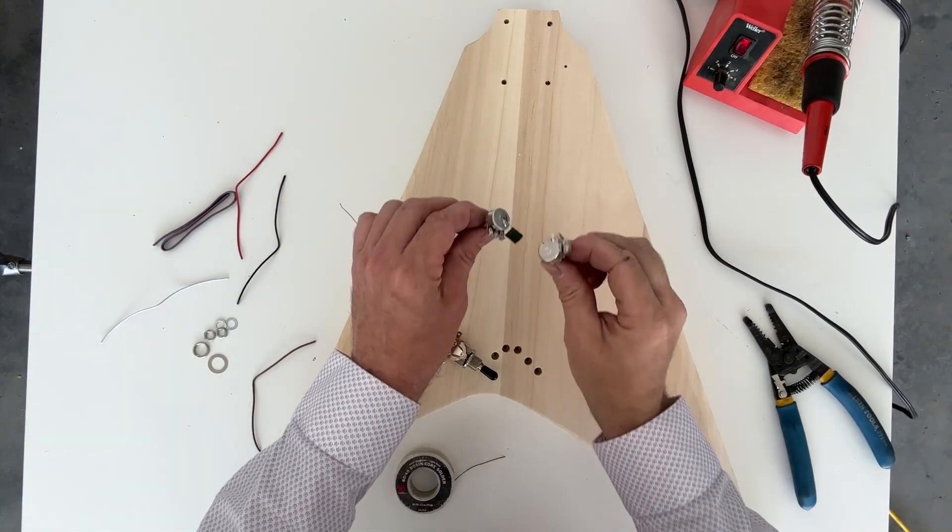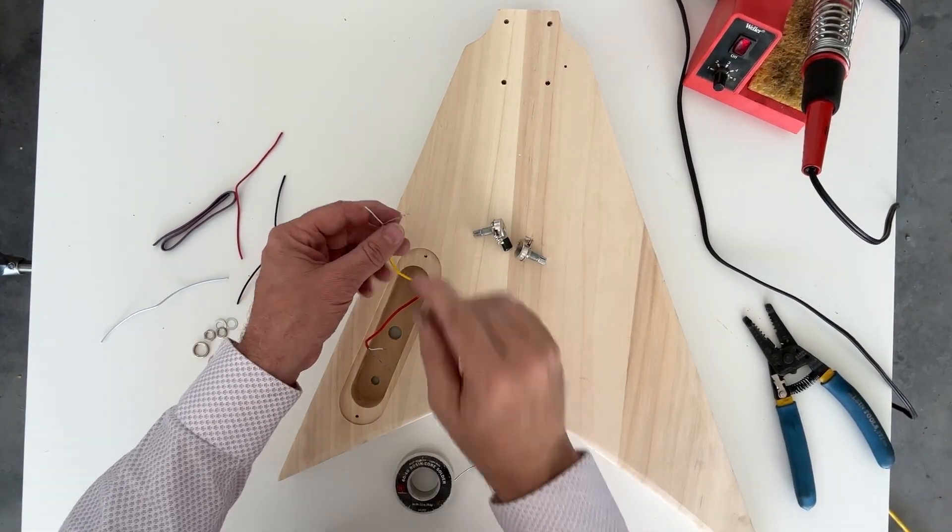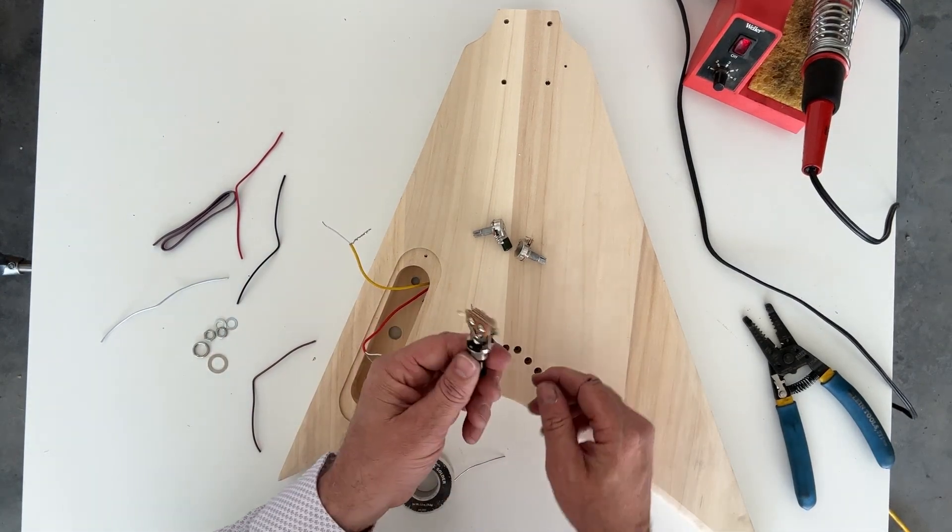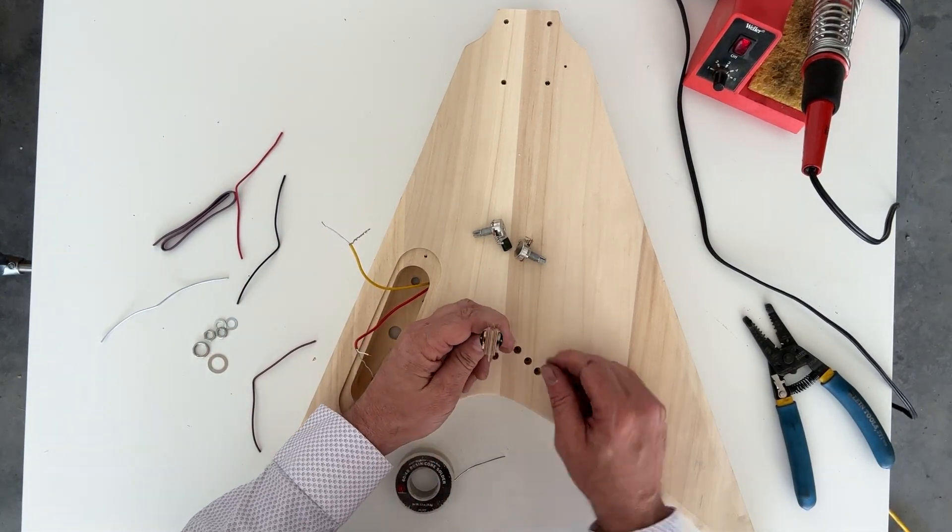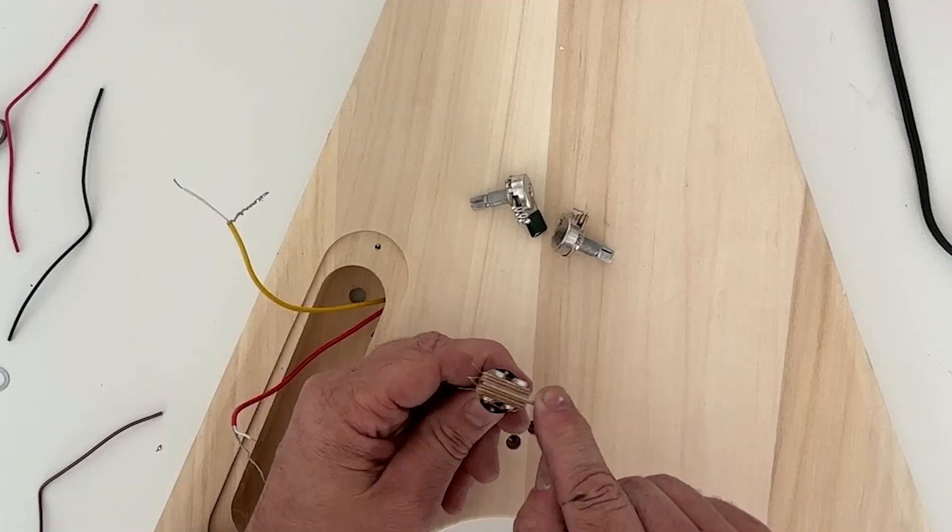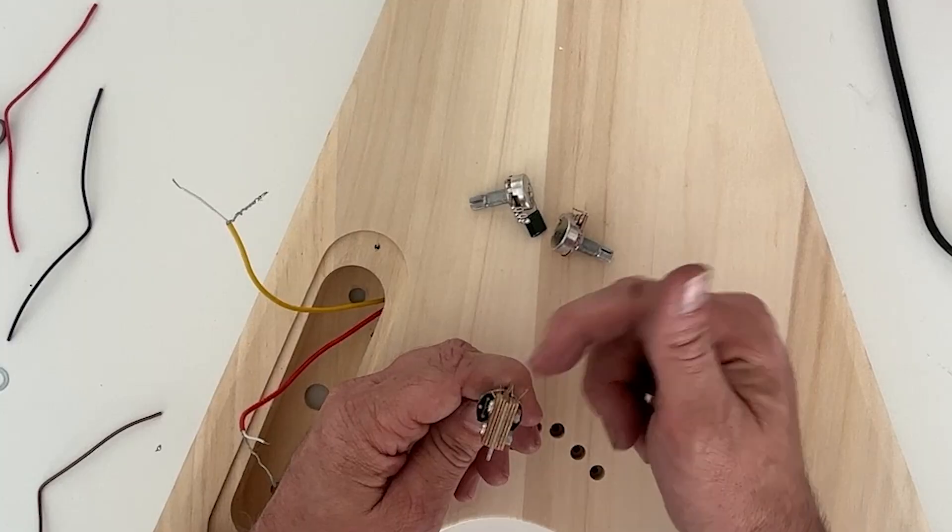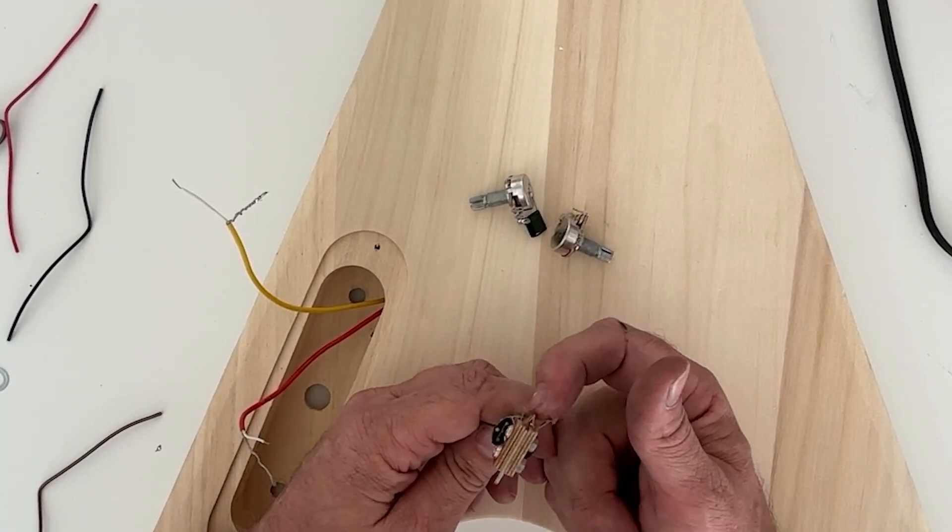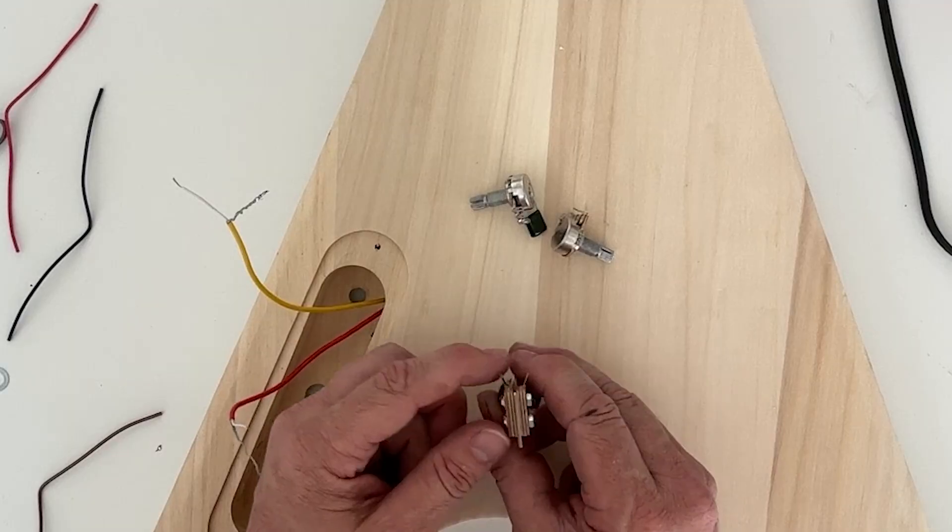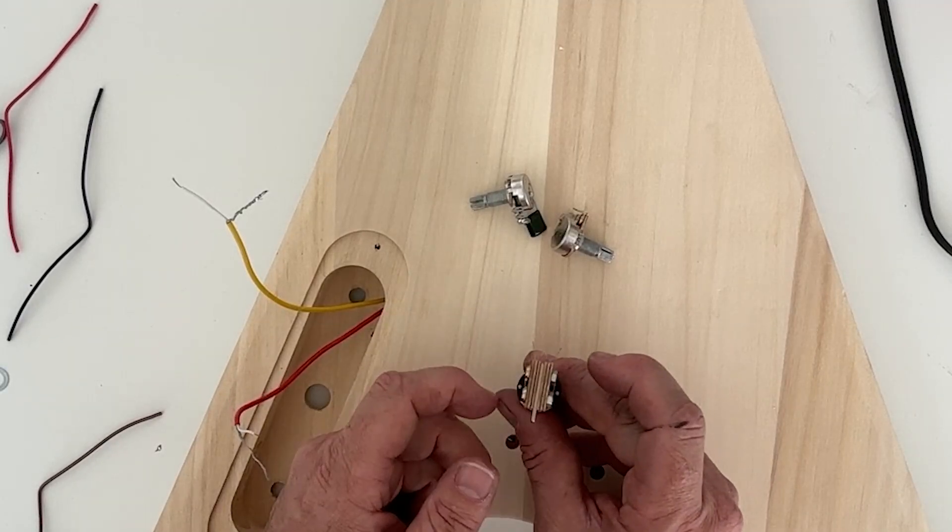Now that we've got our pots prepped, we're going to wire the pickups to the three-way switch. There's a couple of styles of three-way switches that might come in your kit—this is a common one. On one side we have one thick lug that's going to be our ground, and then on the other side we have a set of three: two on the outside and one in the center.